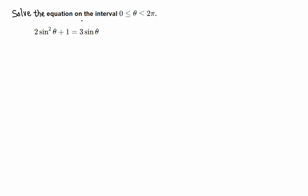Solve the equation on the interval 0 through 2π. We have 2sin²θ + 1 = 3sinθ. So sine theta is the trig function and we have a square, so everything in terms of sine.